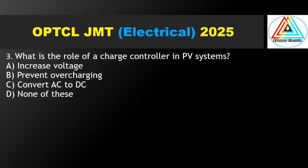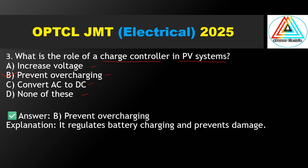Question No. 3: What is the role of a charge controller in a PV system? Options: increased voltage, prevent overcharging, convert AC to DC, or none. The correct answer is prevent overcharging. A charge controller regulates battery charging and prevents damage.